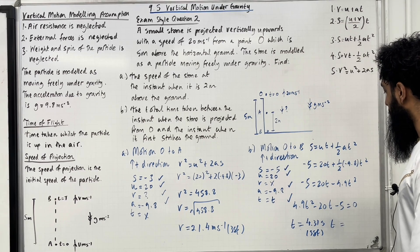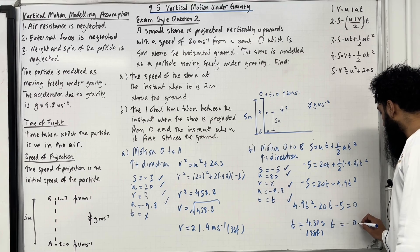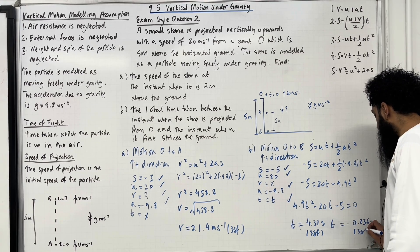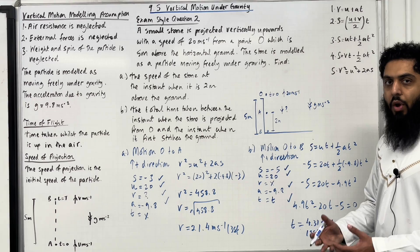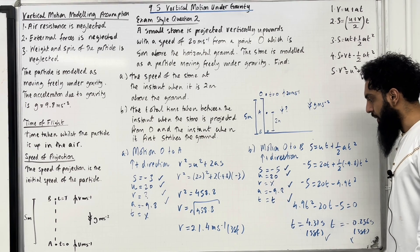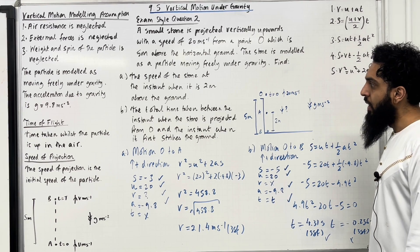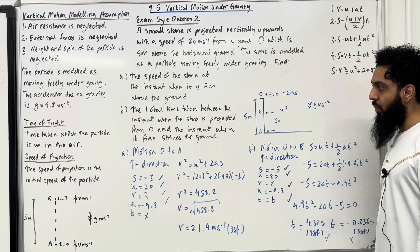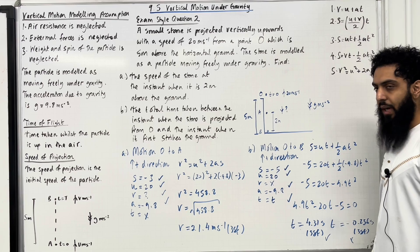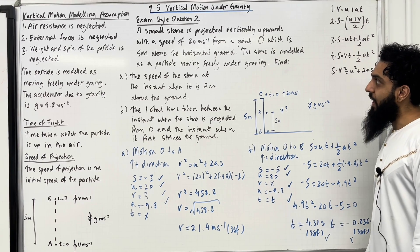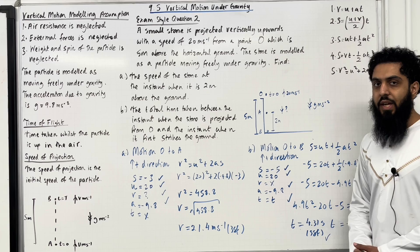We also get T = −0.236 to three significant figures. Since time cannot be negative, we reject that solution and accept T = 4.31. So the total time taken between the instant when the stone is projected from O and the instant when it first strikes the ground is 4.31 seconds. That completes exam style question 2.